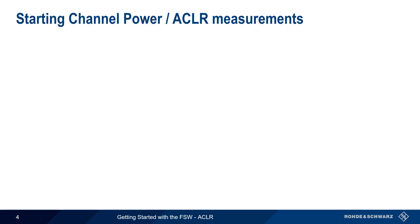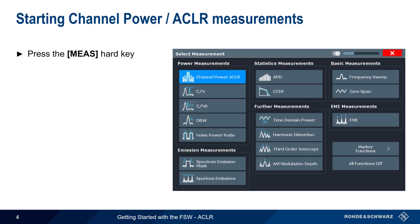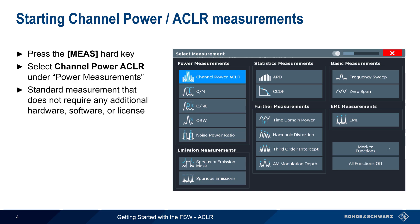To make a channel power or ACLR measurement, press the Measure Hard key and then select Channel Power ACLR from the list of available power measurements. This is a standard spectrum measurement and does not require any additional hardware, software, or license code.